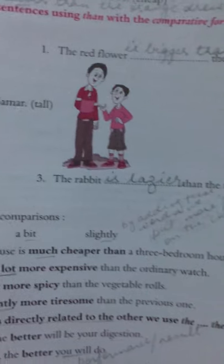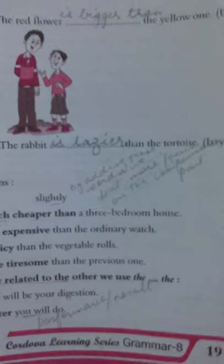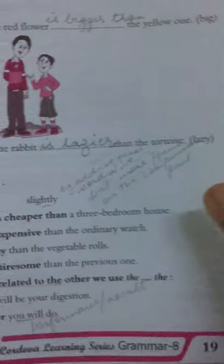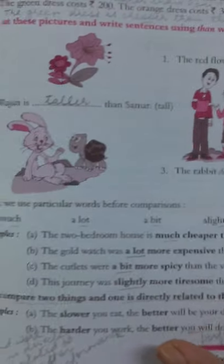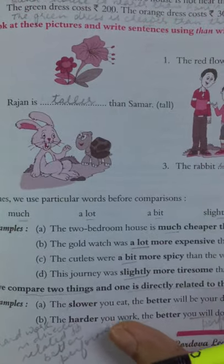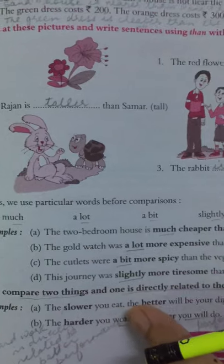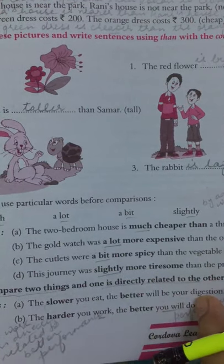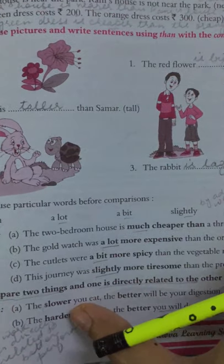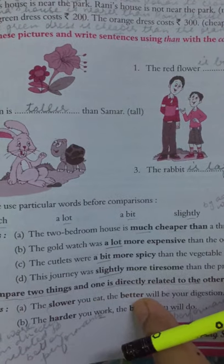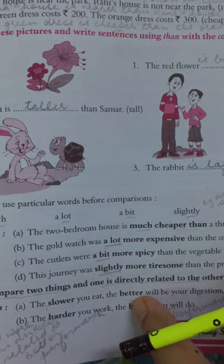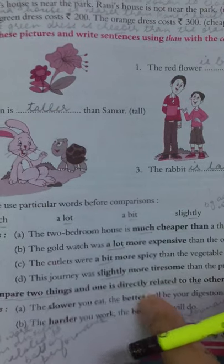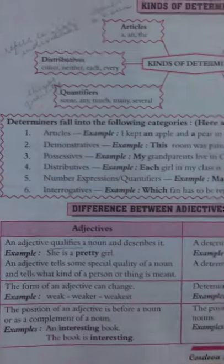This example is on page number 19. The slower you eat, the better will be your digestion. Slower and better are the comparative degrees.